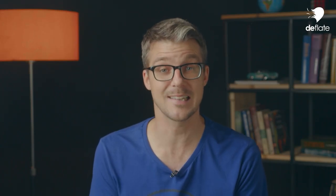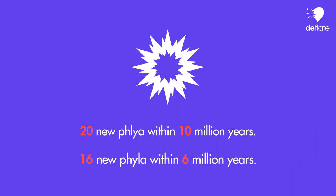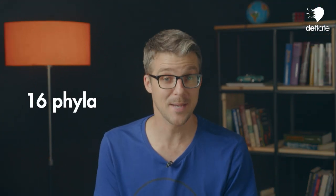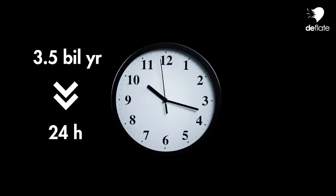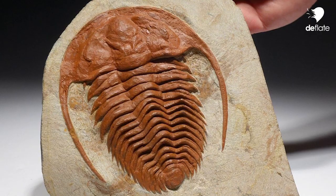In fact, an MIT geochronologist has calculated that at least 16 completely new phyla appear within no more than 6 million years of the Cambrian Era — 16 fundamentally different body plans within 6 million years. That's a lot of anatomical innovation within a mere blink of an eye on an evolutionary timescale. If we compress the history of life on Earth, which began around 3.5 billion years ago, into a 24-hour day, those 6 million years would make up no more than 75 seconds.